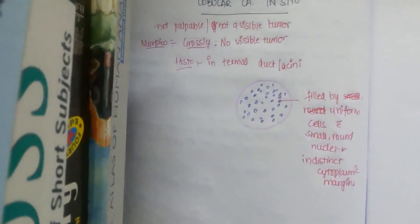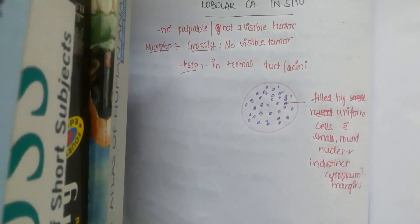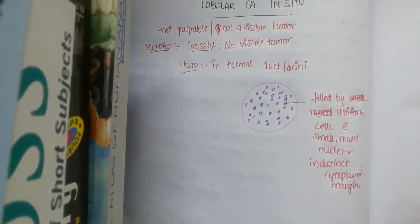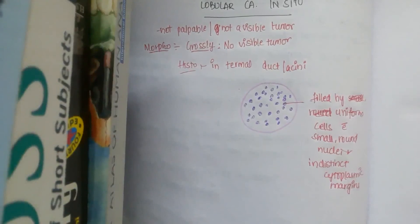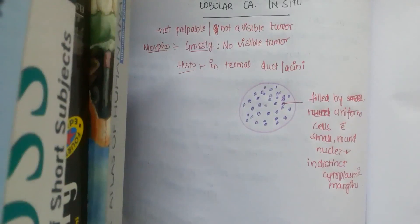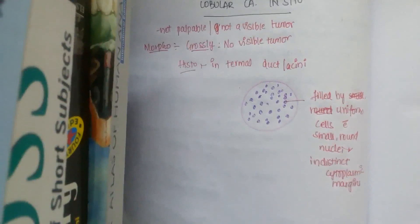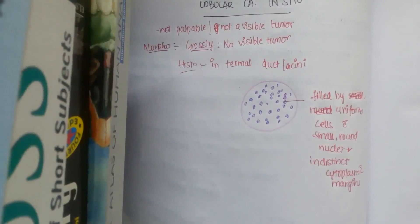These are the features of lobular carcinoma in situ and ductal carcinoma in situ. In this class we have learned about both lobular carcinoma in situ and ductal carcinoma in situ, along with the classification of breast carcinomas. In the next class we will deal with invasive breast carcinoma.